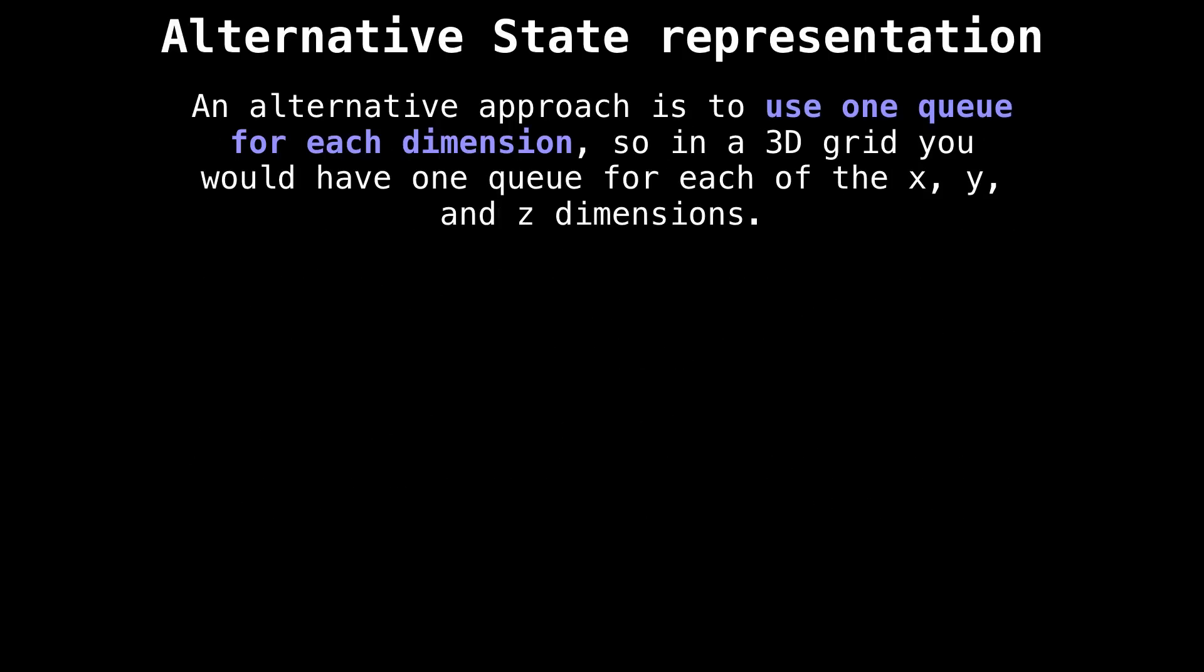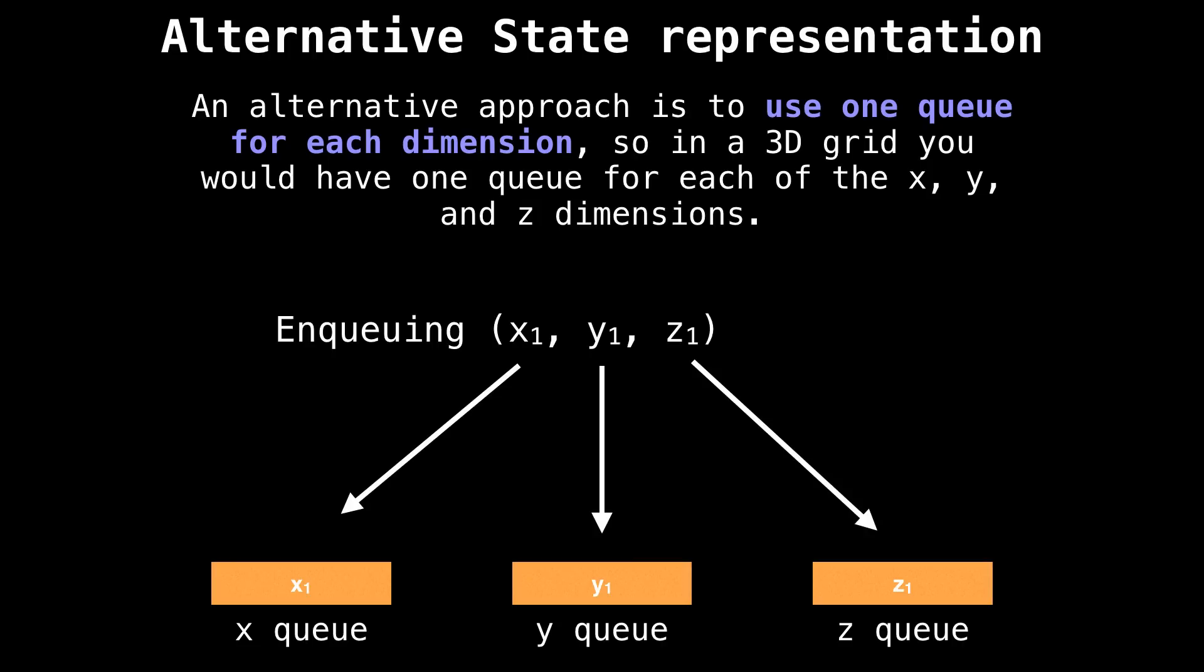So the alternative approach I'm suggesting is to use one queue for each dimension. So in a three-dimensional grid, you would have one queue for each of the X, Y, and Z dimensions. Suppose we're enqueuing the coordinate (x1, y1, z1), then we would simply place each coordinate in their respective queues. So the x coordinate goes in the x queue, the y goes in its own y queue, and so on.